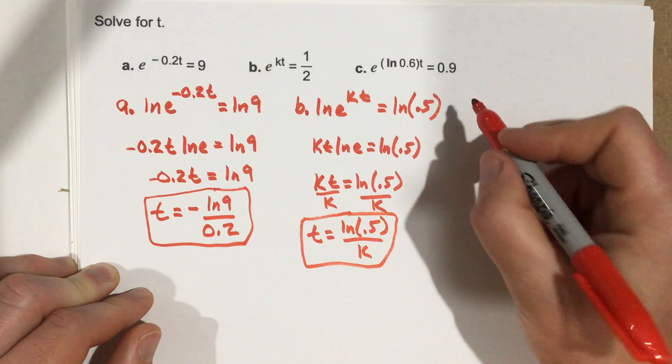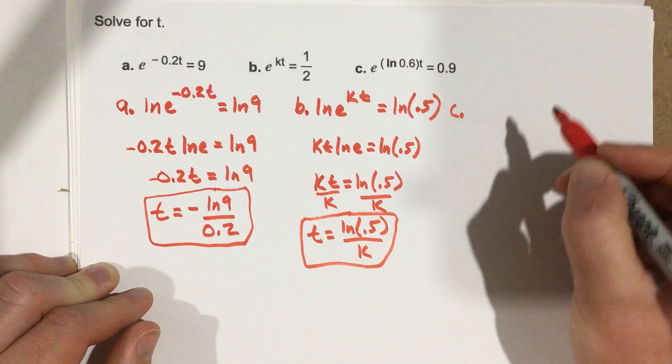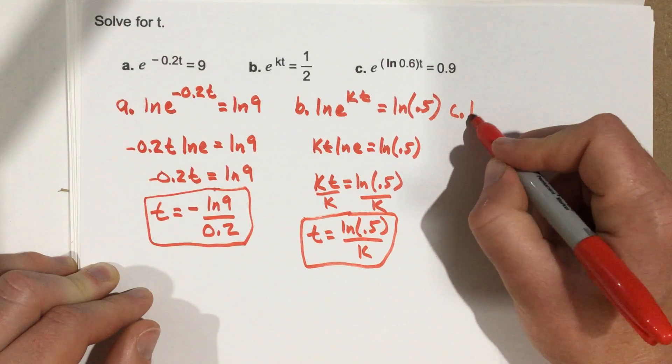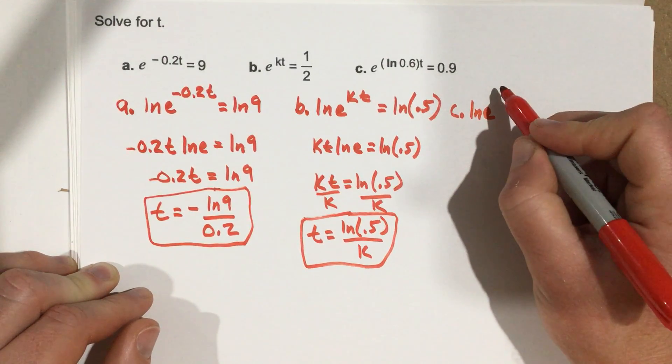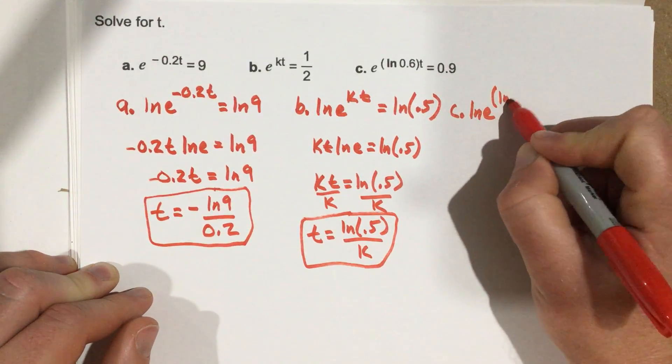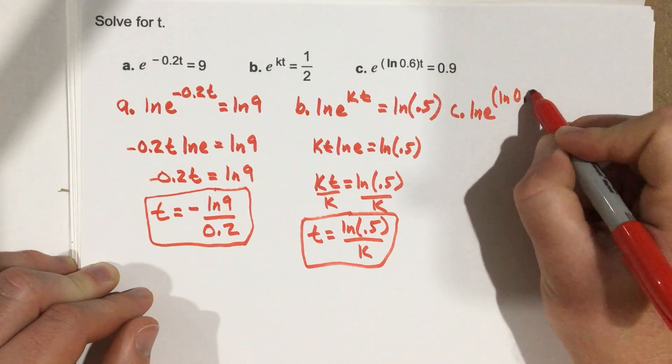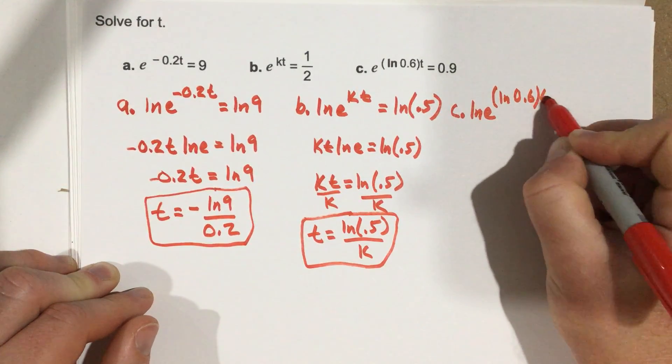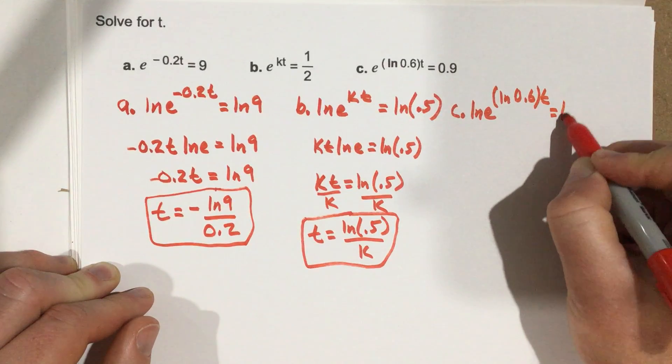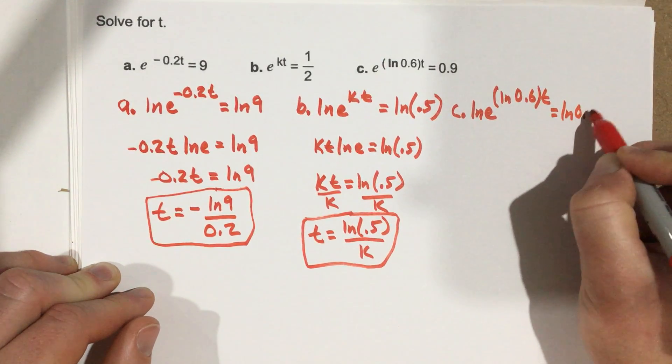Okay, that's part b. Now part c, we're going to do the same thing again. I'm going to take the natural log of e to the natural log 0.6 t equals natural log of 0.9.